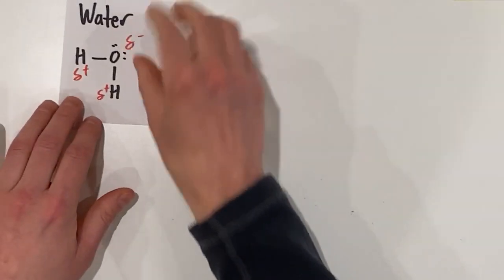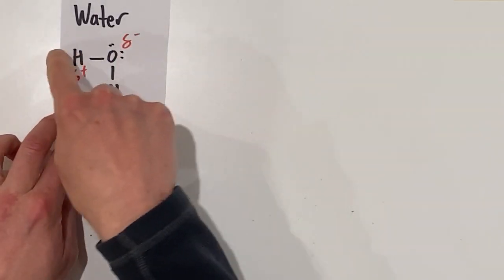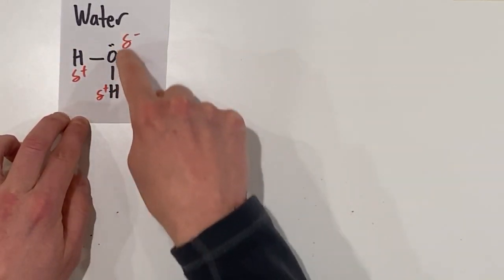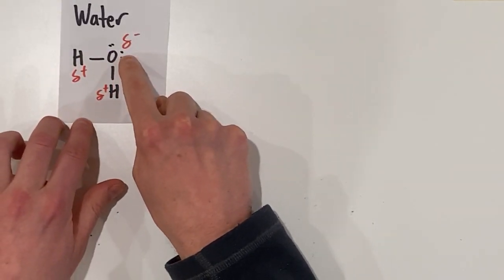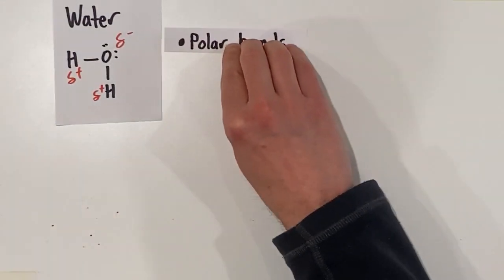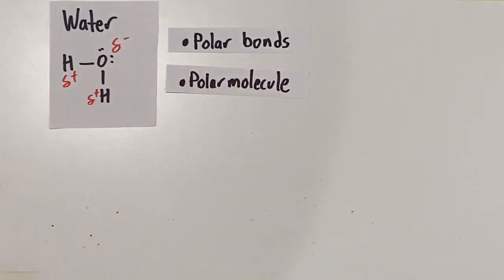Water, as you may remember, has a polar structure. The oxygen in water is more electronegative than the hydrogen, so it pulls the electrons in the shared covalent bond towards itself. So we have two polar bonds in water. And because these polar bonds are not exact opposites, they don't cancel out. We're going to get a polar molecule.